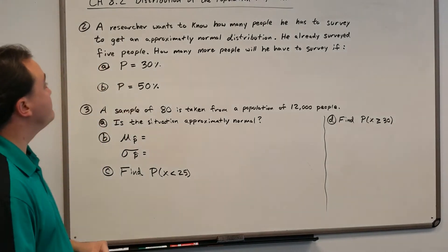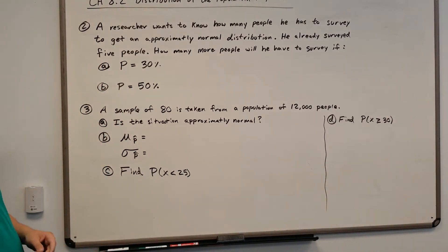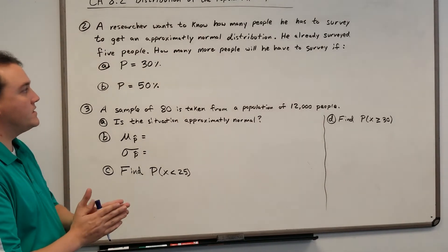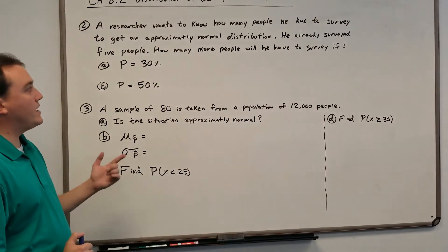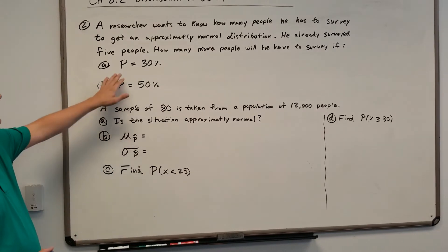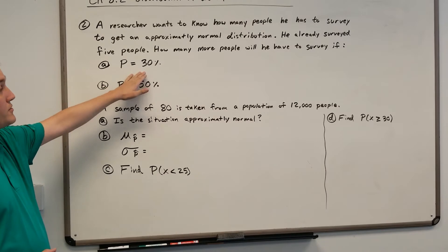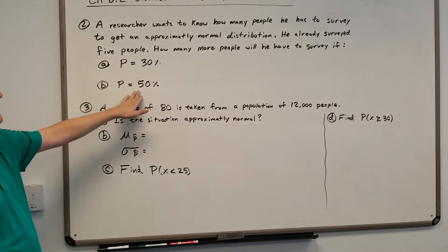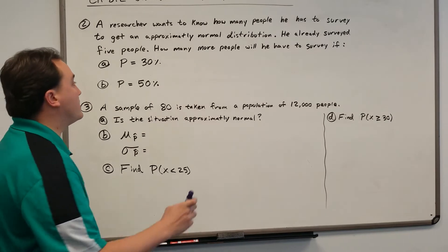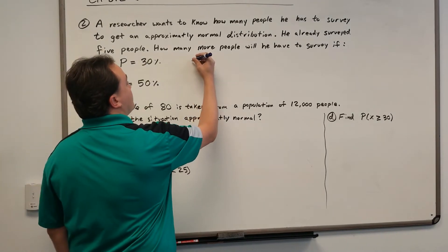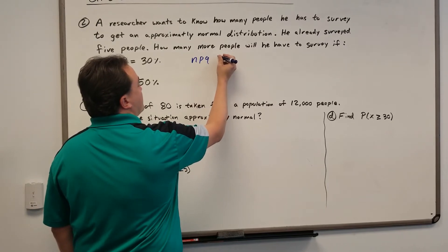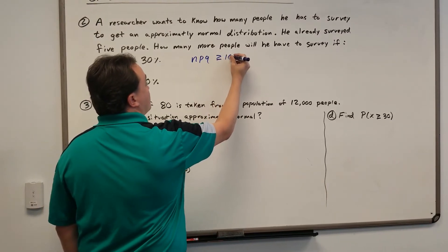A researcher wants to know how many people he has to survey to get an approximately normal distribution. He already surveyed five people. How many more will he have to survey if the probability of success is 30%, or the probability of success is 50%? We use the condition that NPQ must be greater than or equal to 10.